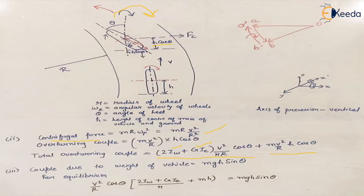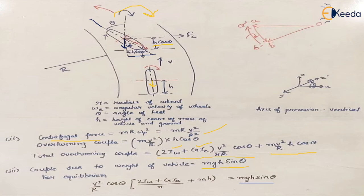The condition for stability says that the total overturning couple should be equal to the couple generated because of the weight of the body, which is mg. The weight mg acts perpendicular downward, and its couple about the contact axis is mg * h sin theta. So as long as the total overturning couple equals mg * h sin theta, equilibrium is maintained and both wheels keep contact with the ground. If this condition is not fulfilled, the vehicle will overturn in the outward direction.